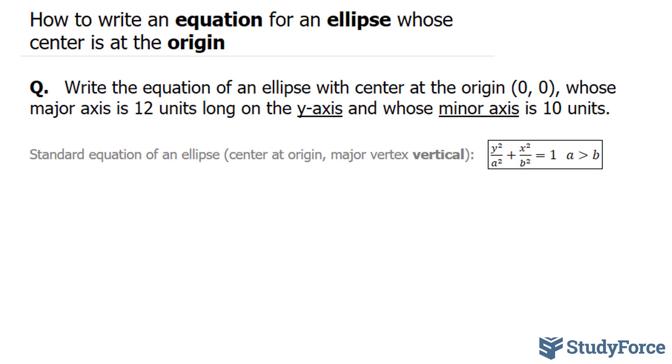We are told that the major axis is 12 units long on the y-axis. This means that this ellipse will be stretched vertically as opposed to horizontally. That also tells us that the larger of the two denominators—notice that the standard equation of an ellipse looks like this—the larger of the two numbers will be underneath the y.